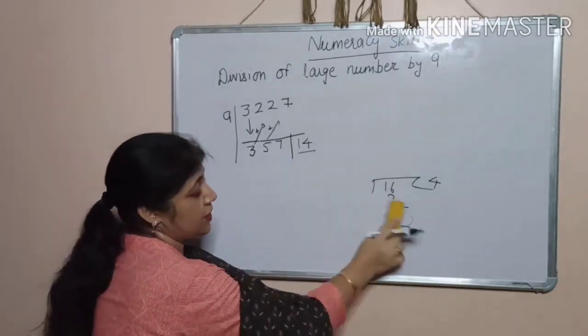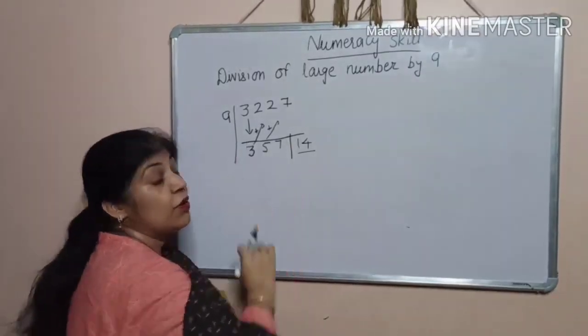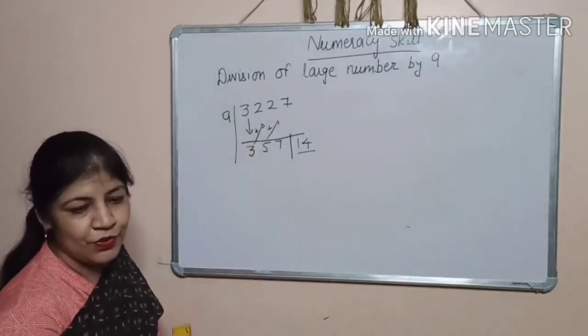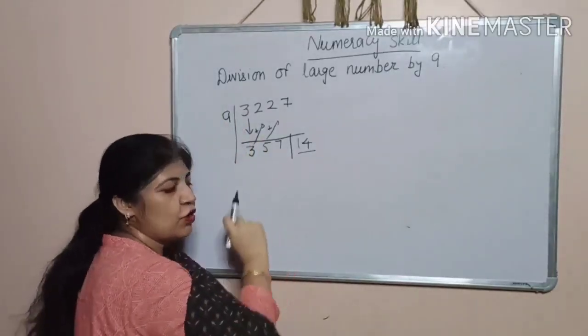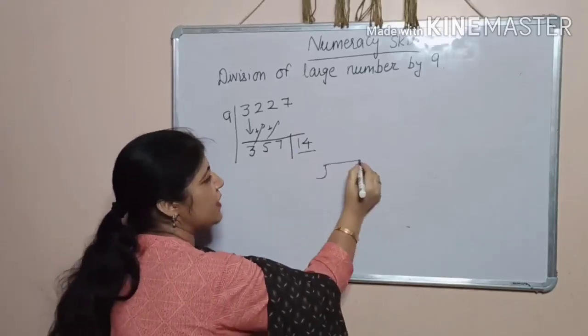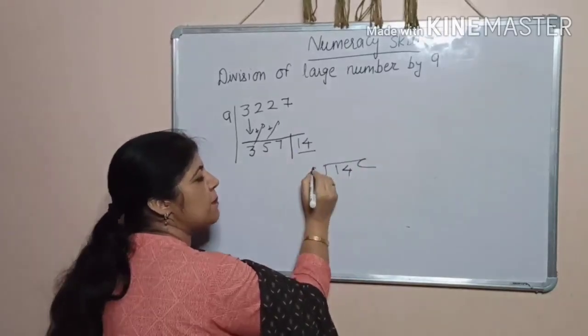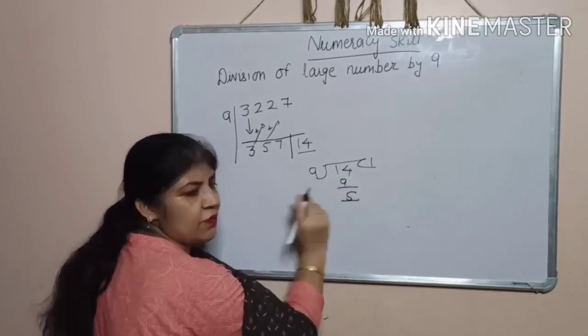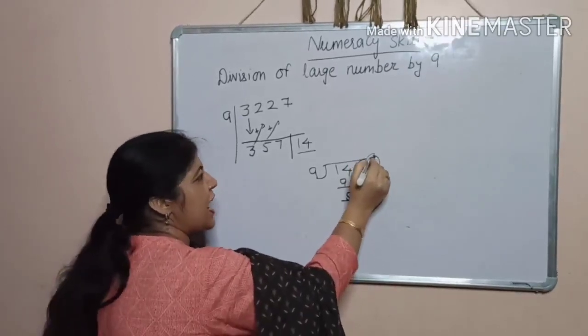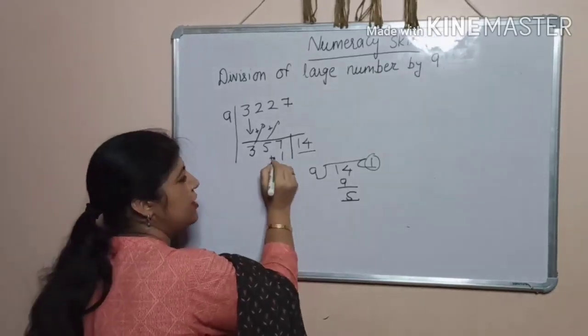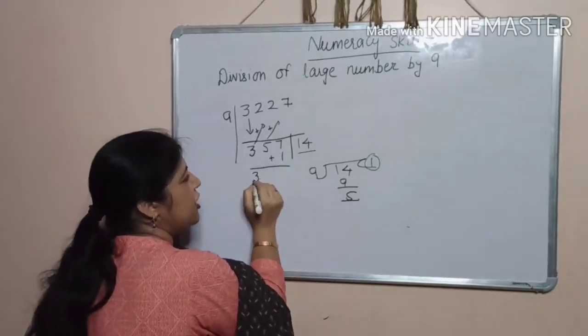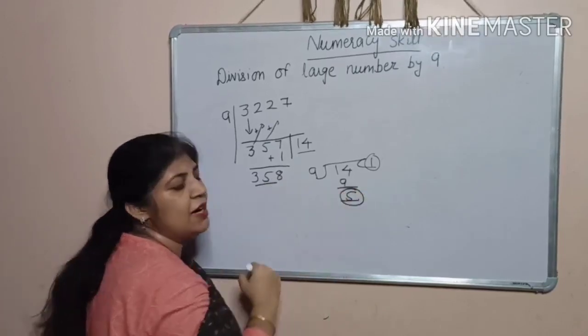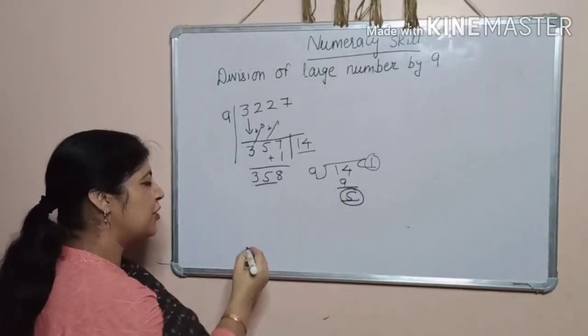So, here is the problem. Now, remainder is more than the divisor. So, for the solution of this, we will divide 14 by 9. 9, 1. You will get 5 here. So, we will add this quotient 1 here.